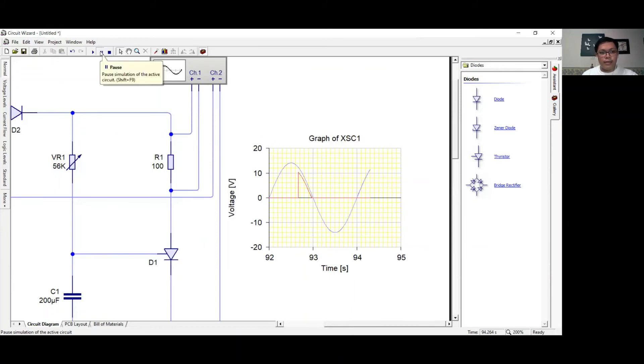What happens if I turn the variable resistance to its lowest setting? If I turn it up to 0%, the firing angle would be at 0 degrees and the conduction angle is at 180 degrees. The relationship of the firing angle and the conduction angle is that they are supplementary.